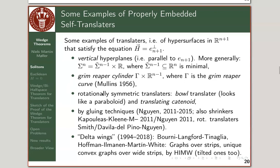There are also rotationally symmetric translators: the so-called bowl translator, which looks a bit like a paraboloid, and a catenoid version of that. By various gluing techniques — started by Nguyen for translators using repro-cylinder constructions and planes, and then for self-shrinkers done by Kapouleas, Kleene and myself, and around the same time by Nguyen — similar constructions using rotationally symmetric dihedral symmetry were done by Smith, David Alpino, and Nguyen.